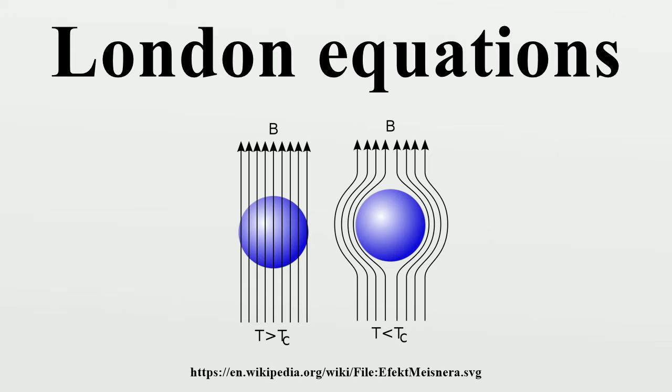The velocity operator is defined by dividing the gauge invariant kinematic momentum operator by the particle mass m. We may then make this replacement in the equation above.